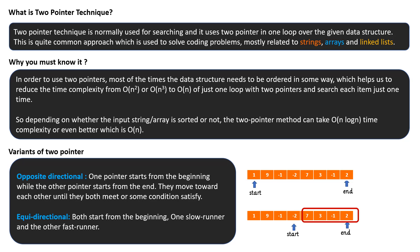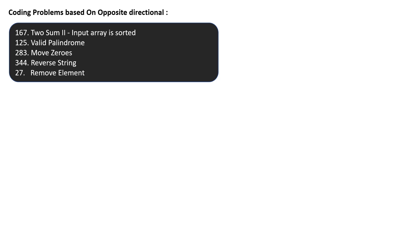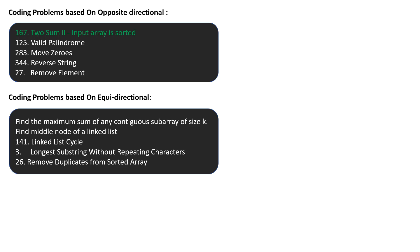There are a lot of coding problems. I have captured a couple based on opposite directional, all present on LeetCode, and today I will show you how to solve the two-sum problem. These are also coding problems based on equidirectional — finding the middle node of a linked list, detecting a loop inside a linked list. I will solve one problem from each variant: for equidirectional, finding the maximum sum of any continuous subarray of size k.